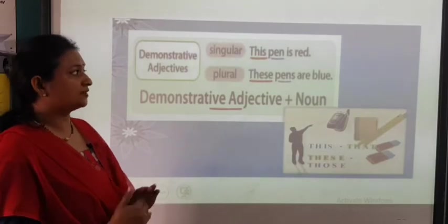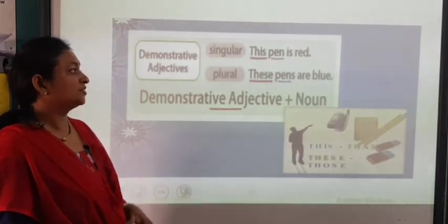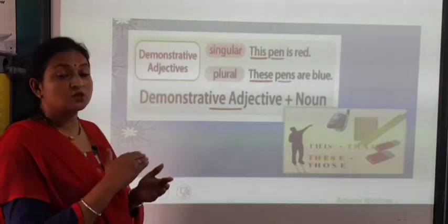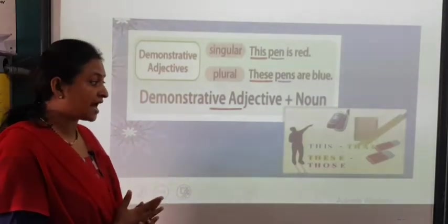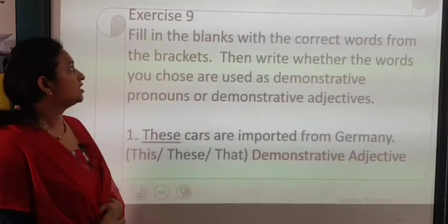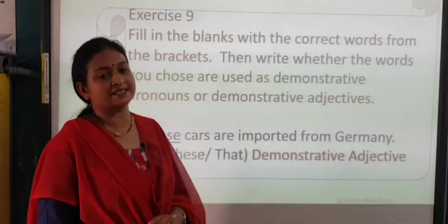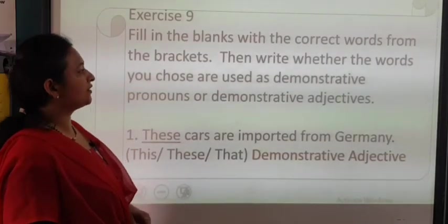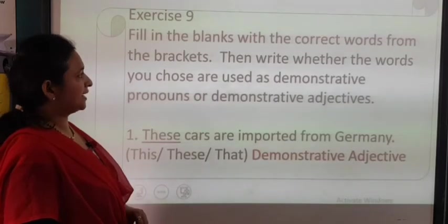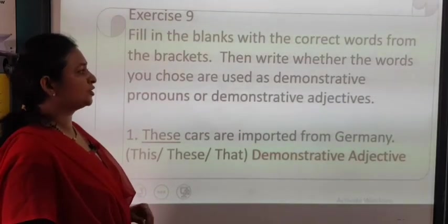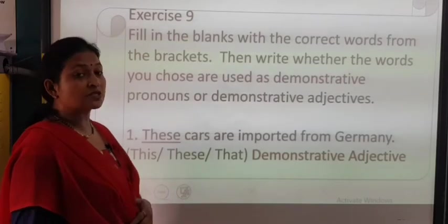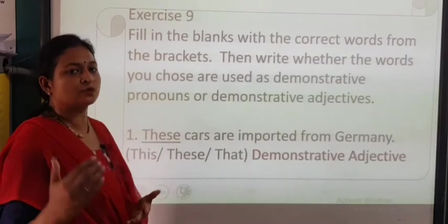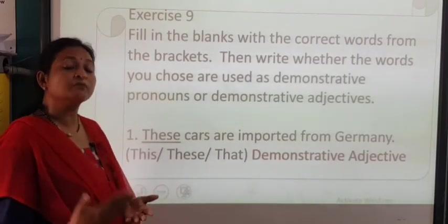Demonstrative adjective — singular: 'This pen is red.' Plural: 'These pens are blue.' A demonstrative adjective is always used along with a noun. Now let us do the last exercise of this chapter — Exercise 9 — filling in the blanks with the correct words from the brackets, and then write whether the words you choose are used as demonstrative pronouns or demonstrative adjectives. You have to fill in the blank as well as mention whether it is an adjective or a pronoun.